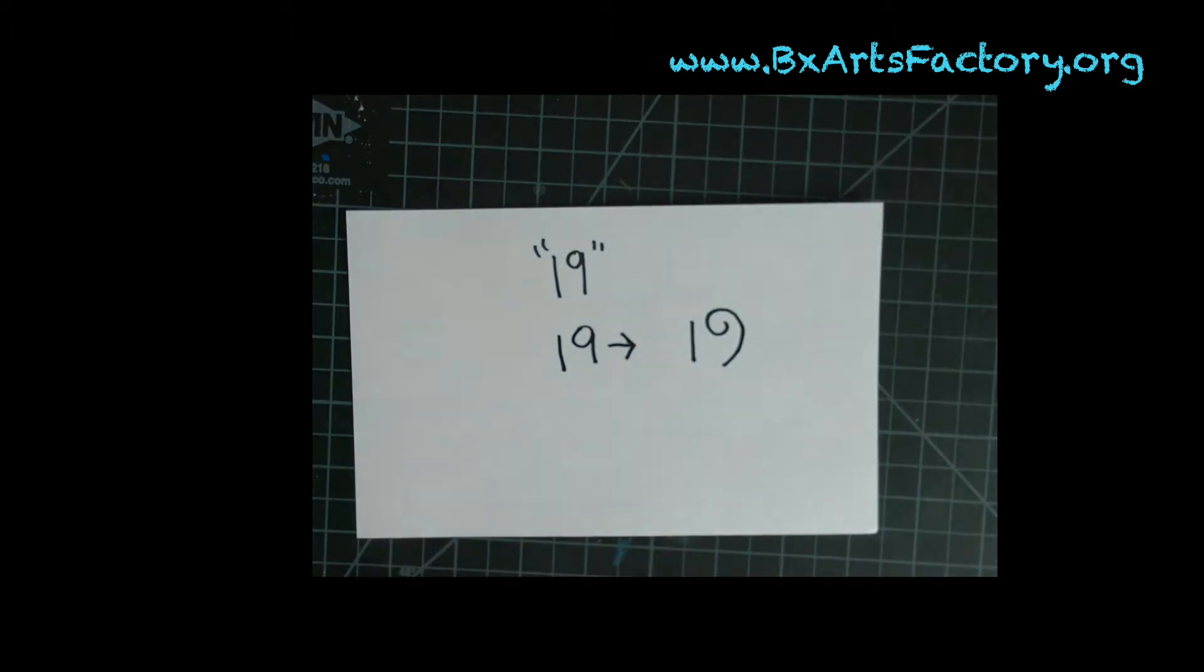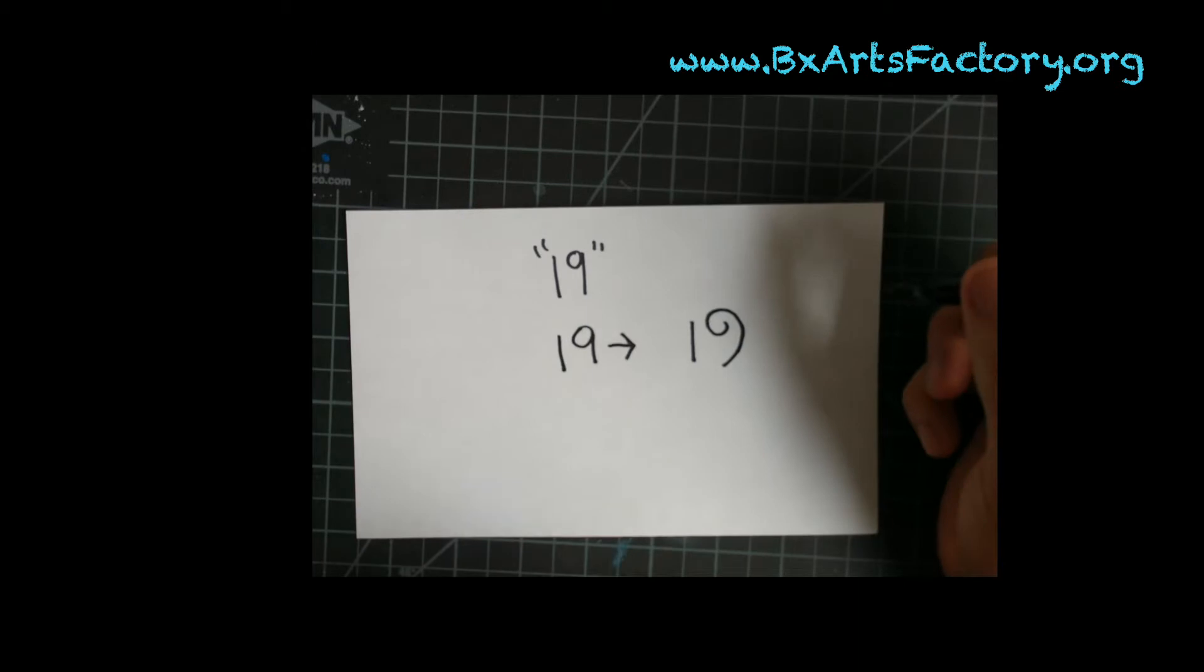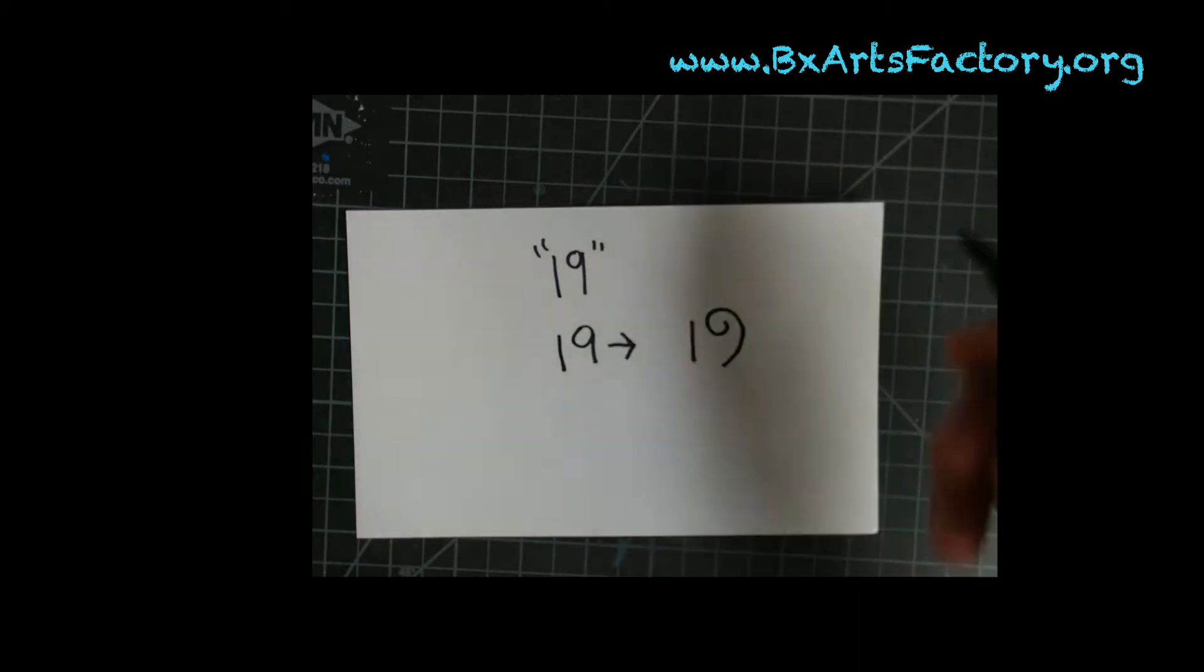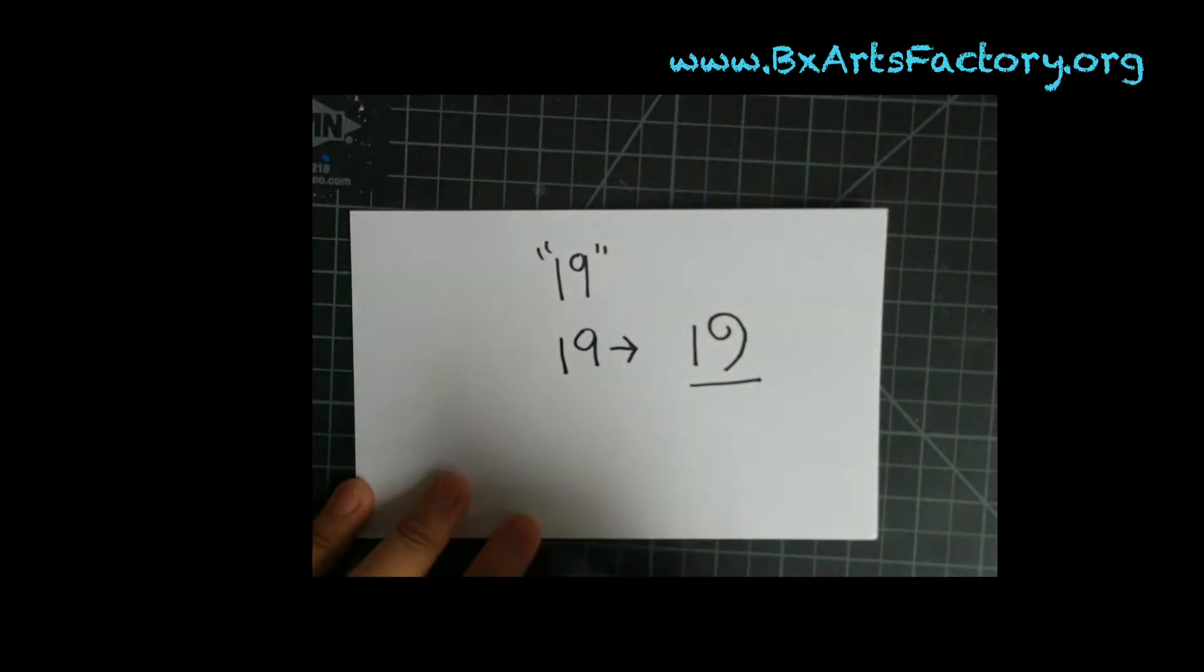This is gonna let us create our picture by adding extra lines so we can create a koala. So let's practice writing the 19 this way so we can get the hang of it.